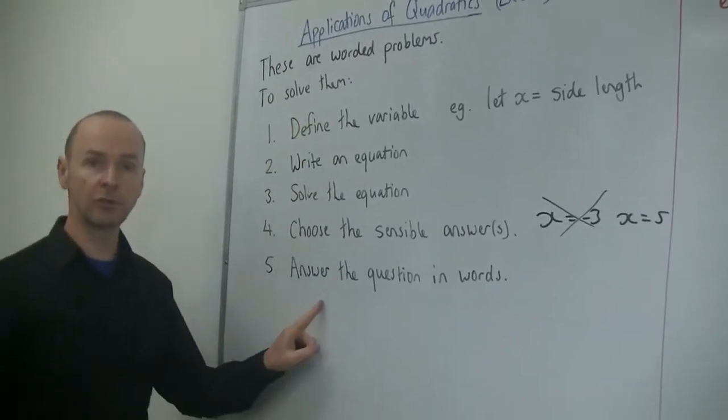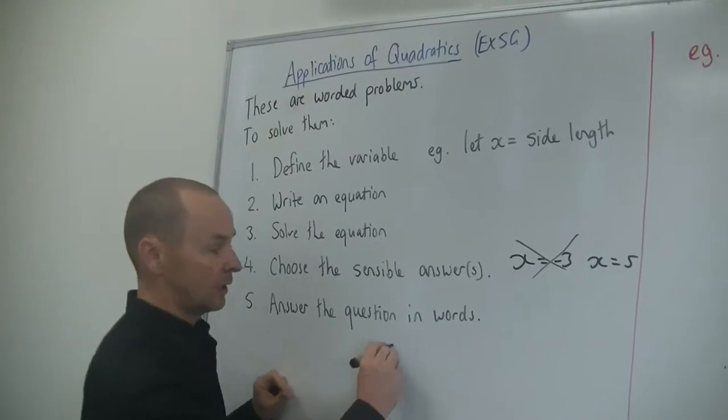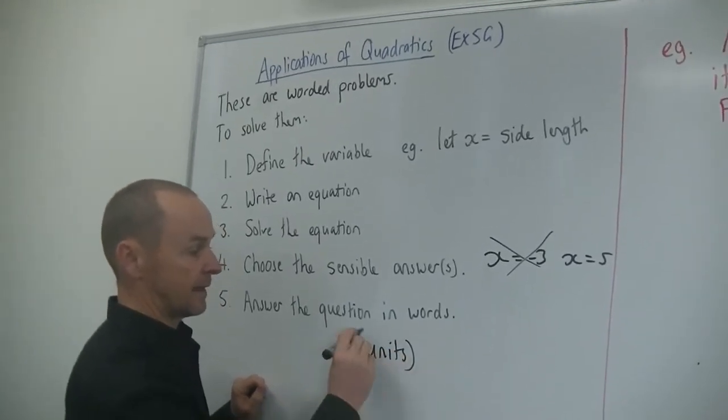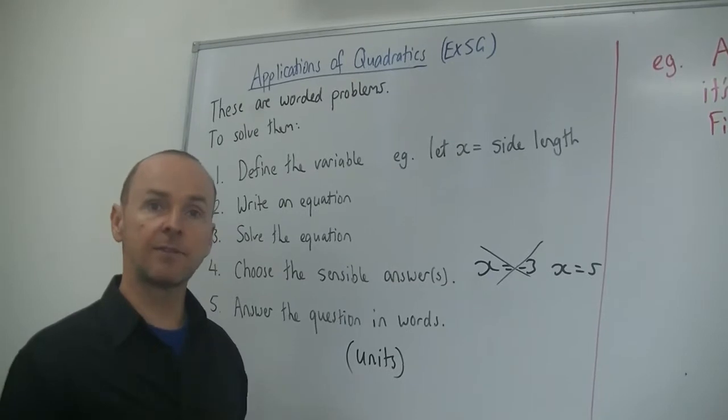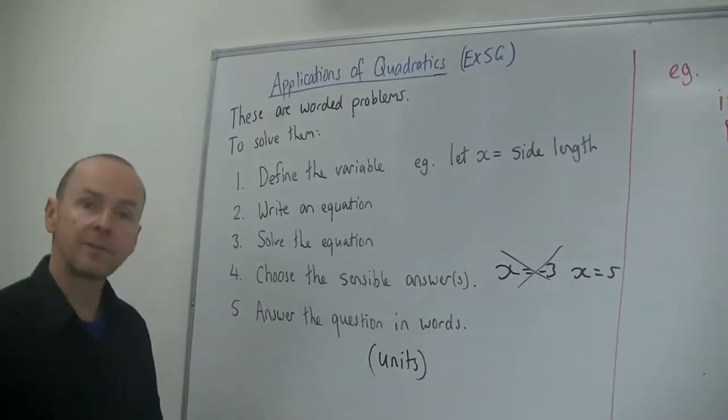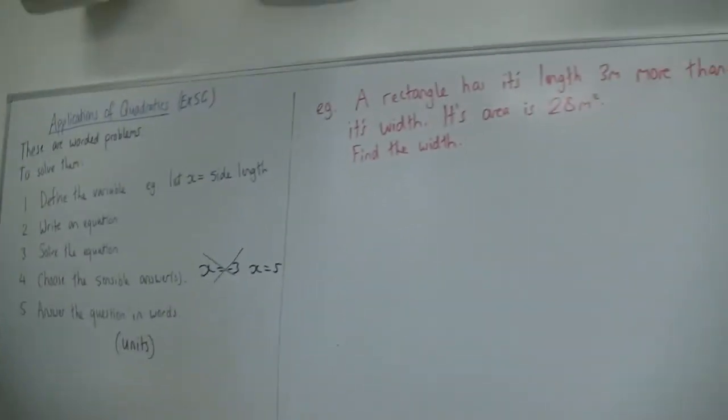And then at the end, you answer the question in words. Don't forget to use units. So if it's centimetres, write down five centimetres and answer the question in words. Excellent. That's all you have to do. Let's do some examples.